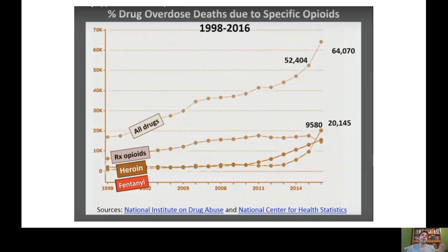This graph gives us the interrelatedness between heroin, fentanyl, and illegal opioids with prescription opioids. You can see the number of drug deaths from 1998 to 2016 increasing from opioids. Opioid overdose deaths are a significant share of this, but then slowly deaths from prescription opioids begin to drop as heroin and fentanyl begin to increase.